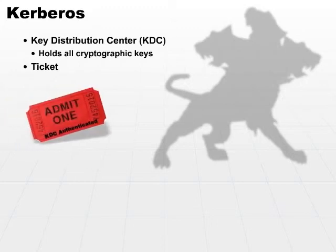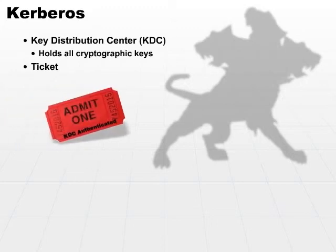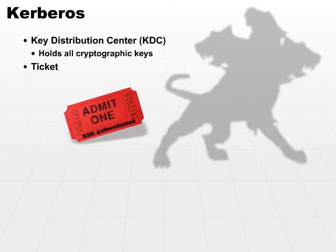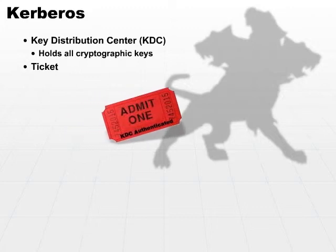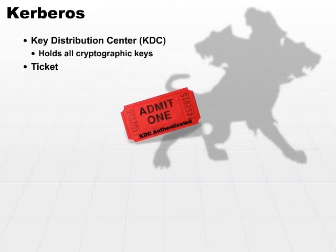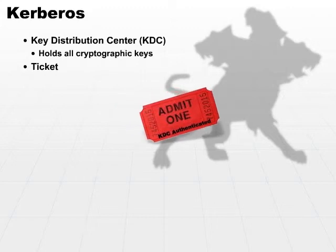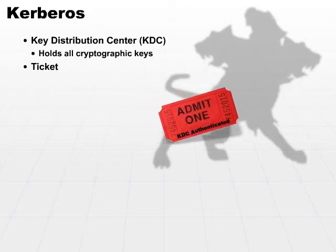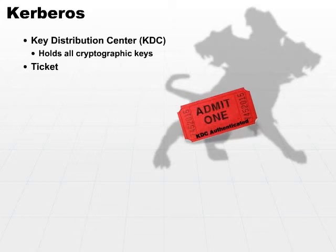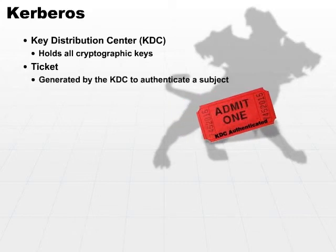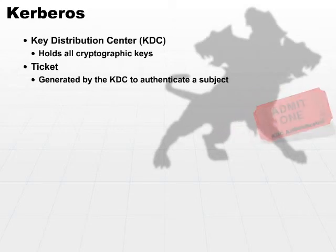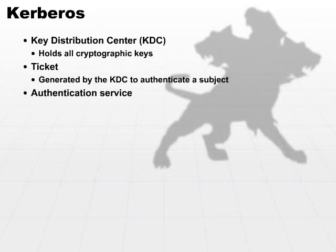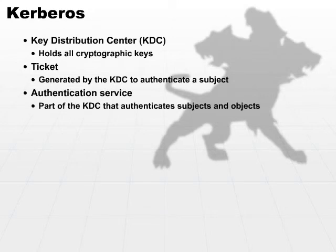A ticket is basically a multiple component message that is sent back and forth. It contains an authentication message that specifies that a subject has been authenticated and is valid to access a specific object. The tickets are generated by the KDC and they're used to authenticate a subject for a specific object. The authentication service is part of this KDC that authenticates the subjects and the objects.